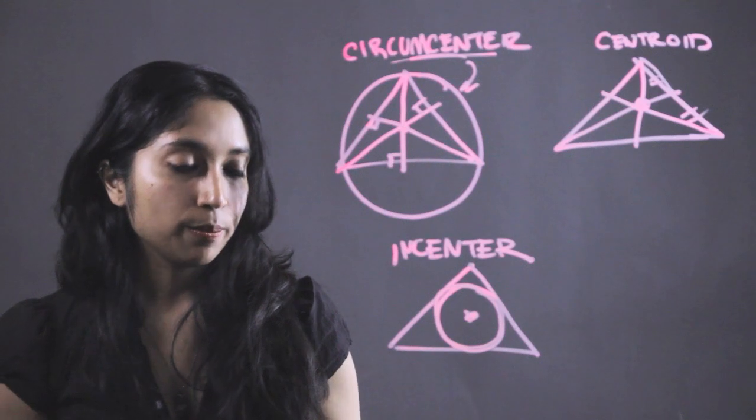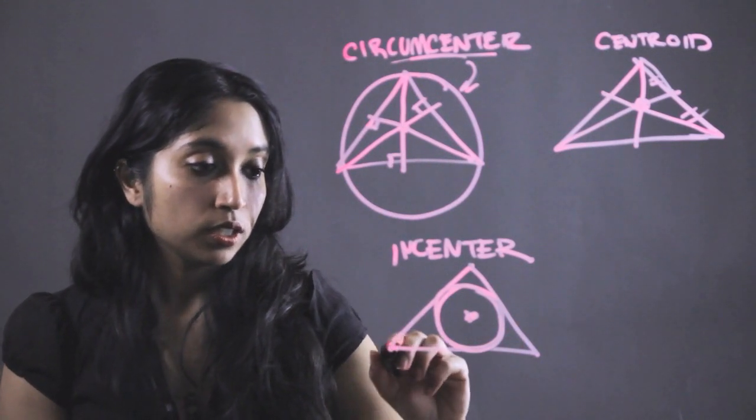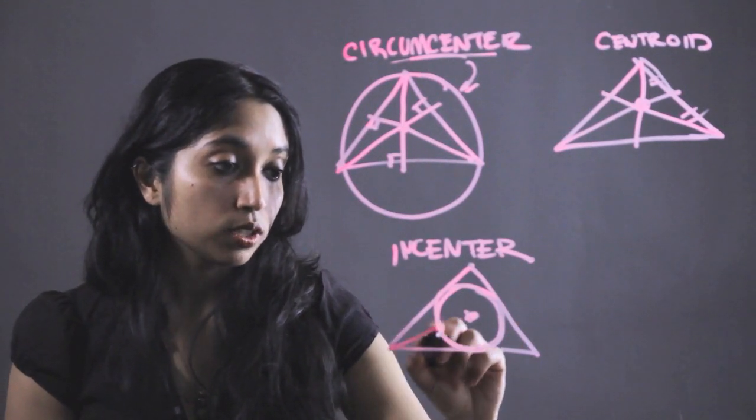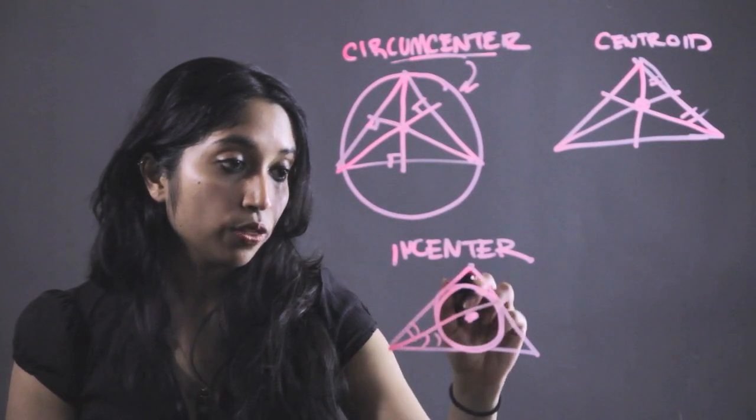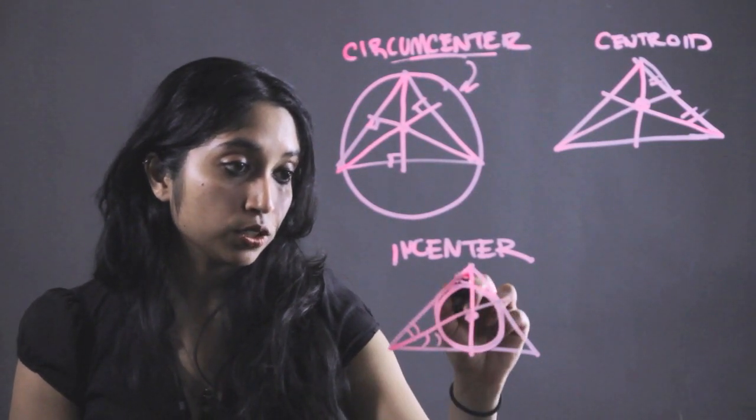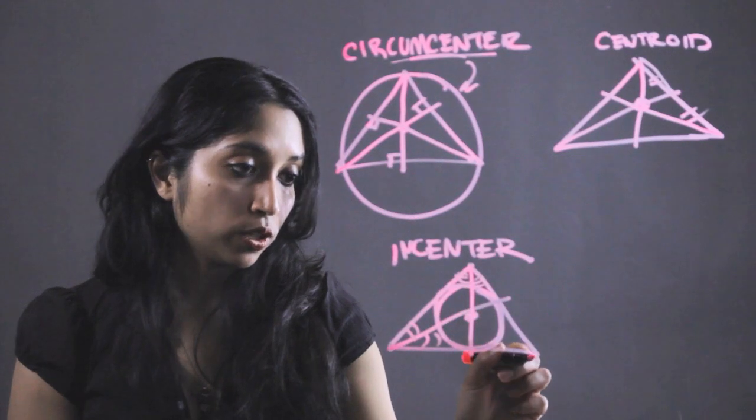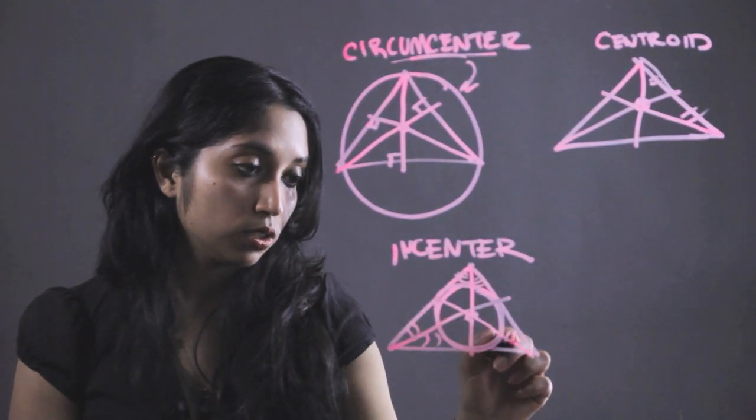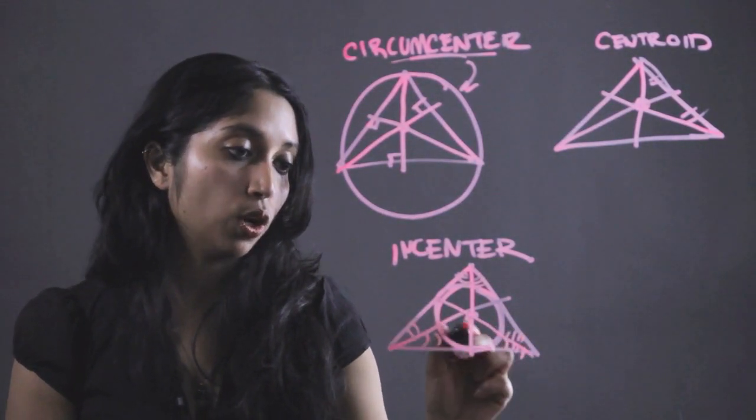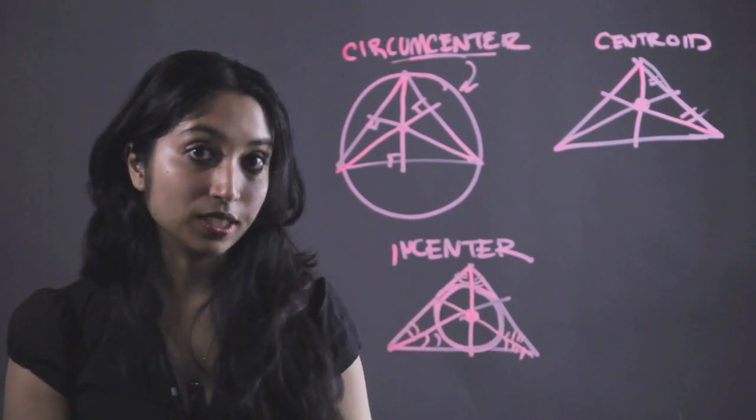Also something to keep in mind when you're trying to solve for the in-center is that it is also the intersection of all three angle bisectors of this triangle. So where all three of those intersect, also the in-center.